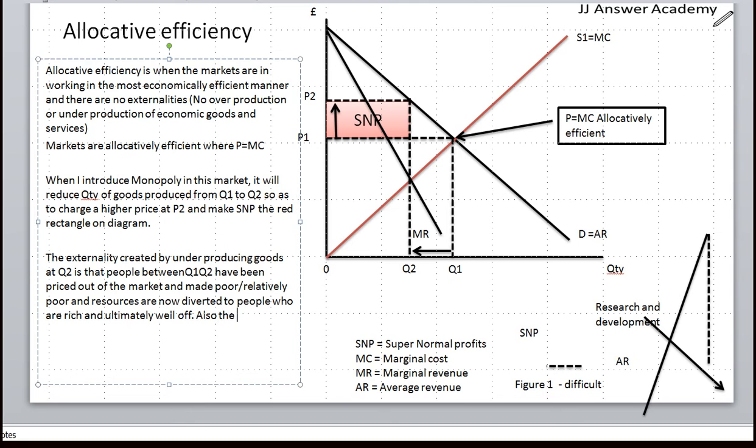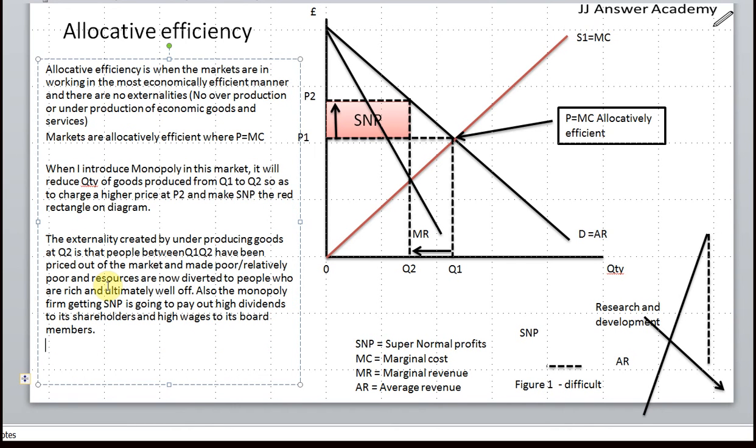Also, the firms that get super normal profits pay out high dividends to its shareholders and high wages to its board members. And that is why monopolies at times are not desirable in the market.